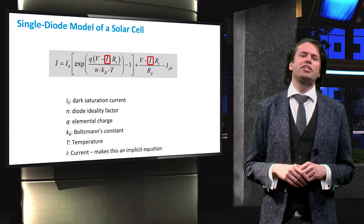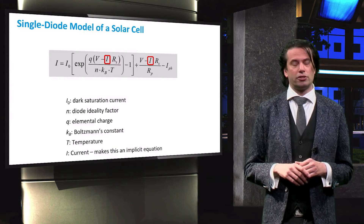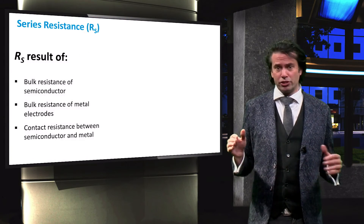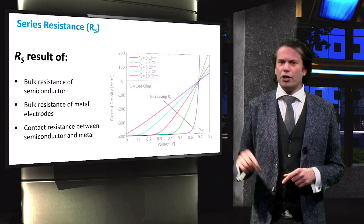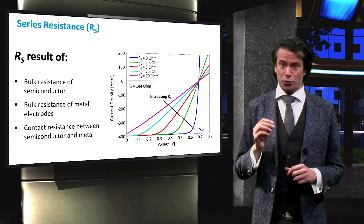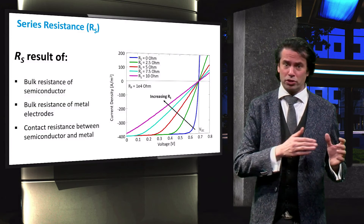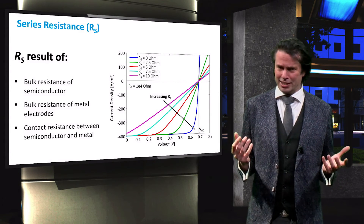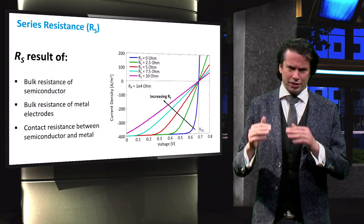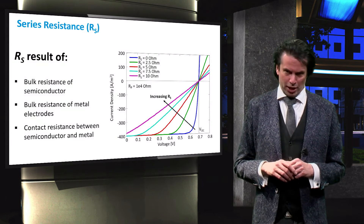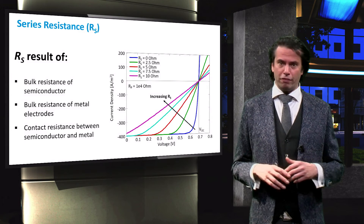Let's take a look at how these curves can be changed due to these resistances. First, let's examine the series resistance RS. RS is caused by bulk resistances of the semiconductor materials and the metal electrodes. The contact resistance between the semiconductor and the metal also influences RS. You can see from this plot that as we increase RS from 0 up to 10 ohms, the solar cell goes from a diode characteristic to an almost linear characteristic. Increasing the series resistance decreases the maximum output power, even though the VOC and ISC stay the same. Therefore, RS only affects the fill factor of our solar cell.